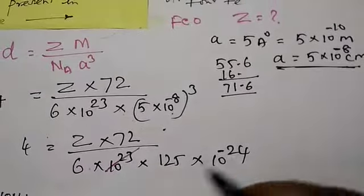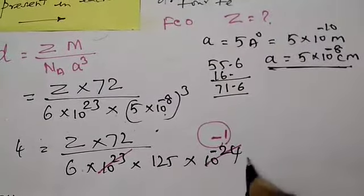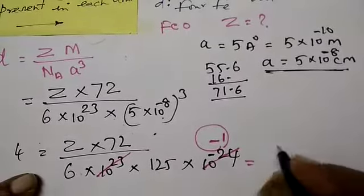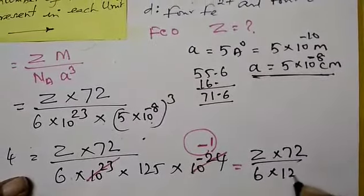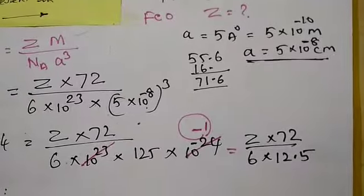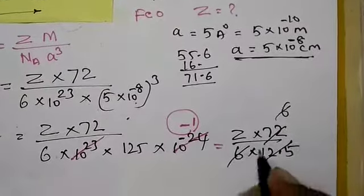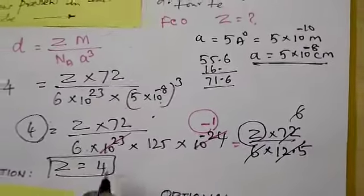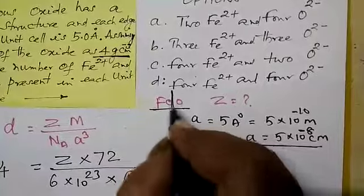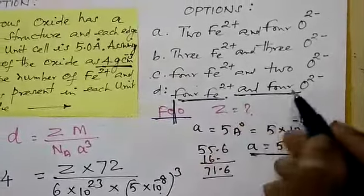On cancelling the powers: 4 equals Z into 72 divided by 6 into 12.5. Simplifying, 6 and 6 cancel, giving Z equals 4. So the number of atoms per unit cell: iron is 4 and oxygen is 4. That means 4 Fe²⁺ and 4 oxide ions per unit cell.